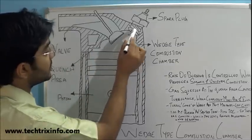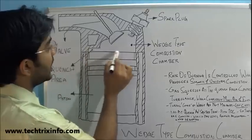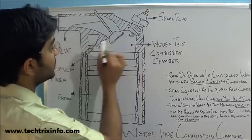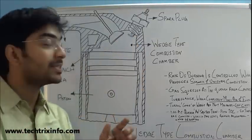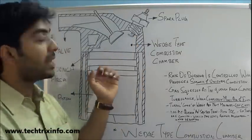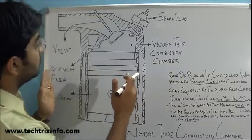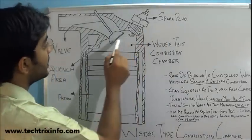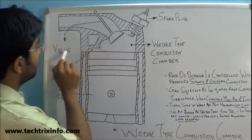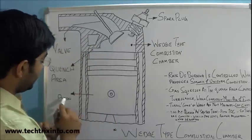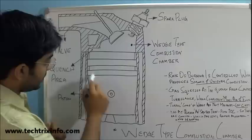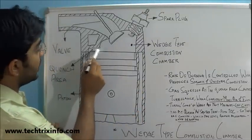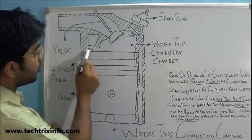Let's identify the components. This portion is called the wet state combustion chamber — you can see the shape is wedge, that's why it's called the wet state combustion chamber. Here we have a spark plug, we have a valve over here, and this is a piston over here.